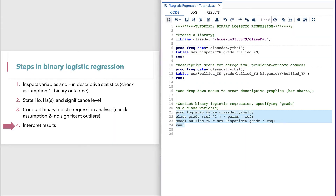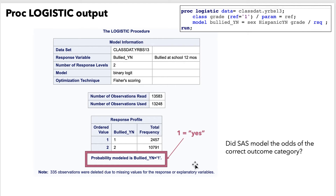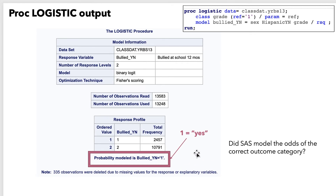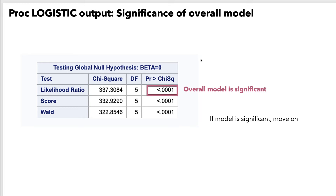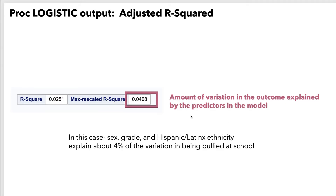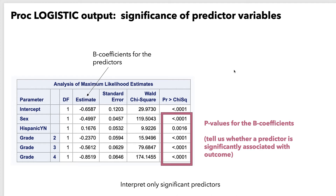Let's go ahead and run our model and interpret the results. The first thing I always look for in the output is the probability modeled statement, which tells us if SAS modeled the odds of the correct outcome category. Here we see that SAS modeled outcome 1, which is yes — and that's what we wanted. Next we look at the testing global null hypothesis table, which tells us whether the overall model is significant. We interpret the likelihood ratio p-value. The next thing we look for is the R-squared table, and we want to interpret the adjusted R-squared. Then we find out which predictors were significantly associated with the outcome by looking at the analysis of maximum likelihood estimates table, specifically at the p-values for the predictors.